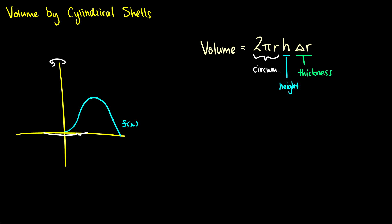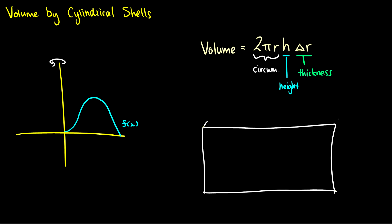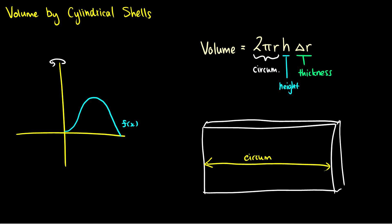The volume for any cylinder is the circumference times the height times the thickness. If we take a cylinder and unwrap it, we end up with a box-like shape. It has a circumference of 2πr, since we take a circle and stretch it out. The height is usually the curve itself, f of x, and the thickness depends on how thick our slice is. In calculus, we use infinitely small slices, so this is essentially dr.